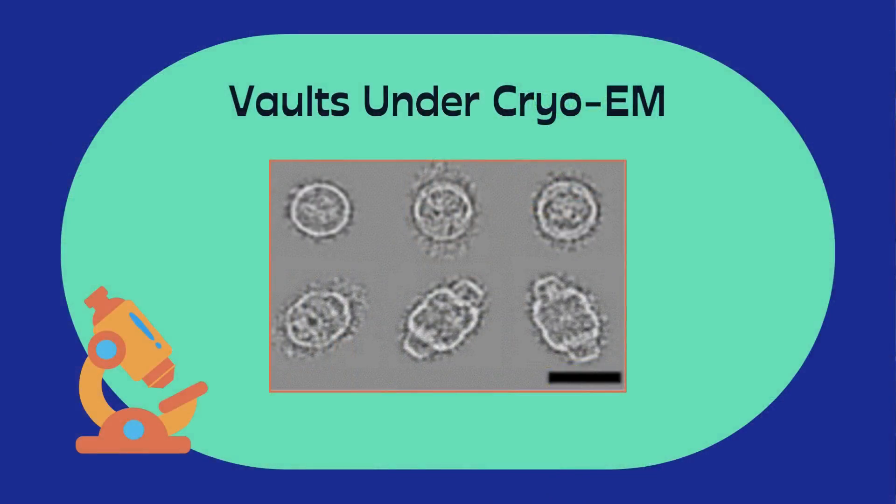When individual vaults were viewed under these conditions, the images looked somewhat like the EMs I've showed you before, but they had even less detail, and there appeared to be some different shapes — some were round, some were ovoid. This was because the vaults were frozen as they were tumbling around in three-dimensional space. If we look at the football from the side, we see that it looks ovoid, but when viewed from the end, it looks round.